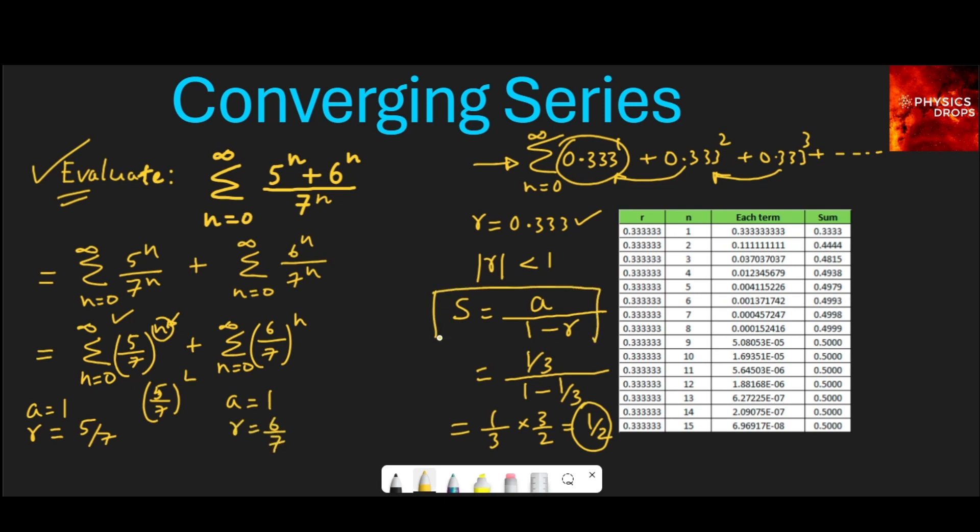Then using this formula here, the sum is a by 1 minus r, because both the values of r, if you see here, are less than 1. 5 upon 7 is less than 1, and 6 upon 7 is less than 1.